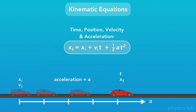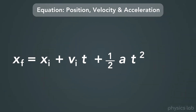This first equation includes the variables for time, position, velocity, and acceleration. For an object that's accelerating, this equation helps us find the object's position at any point in time by using the initial position, the initial velocity, the acceleration, and how long it's been accelerating for.